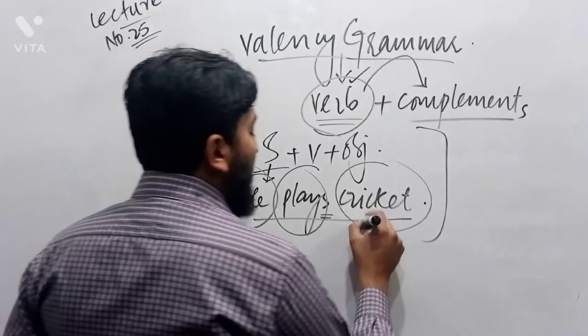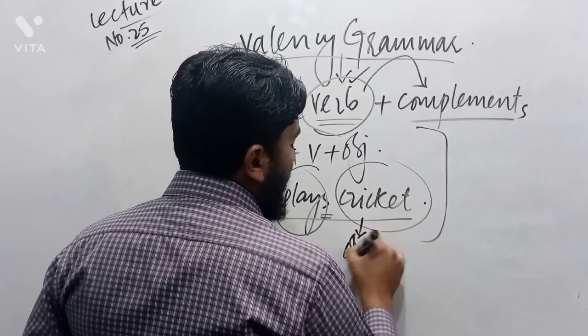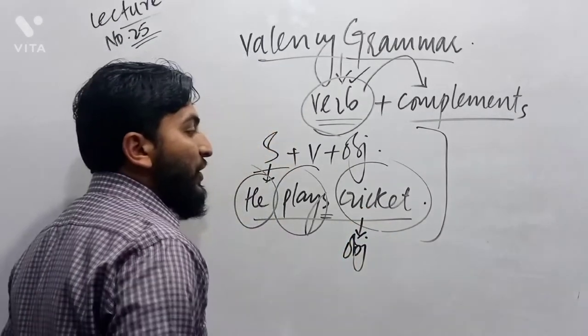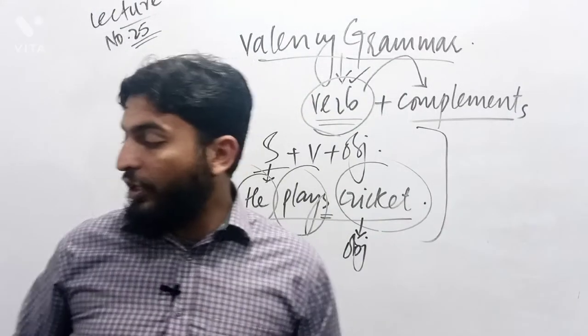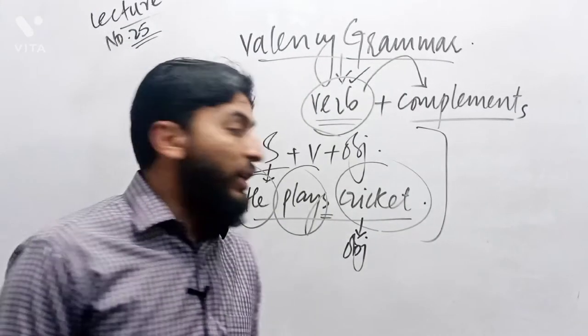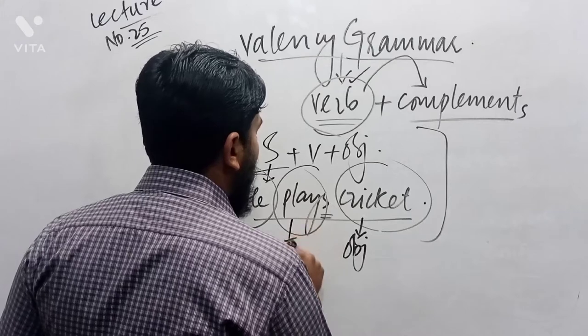Now what is cricket? This is an object. But what kind of structure can we form and what kind of verb is used here? This verb is called transitive verb.